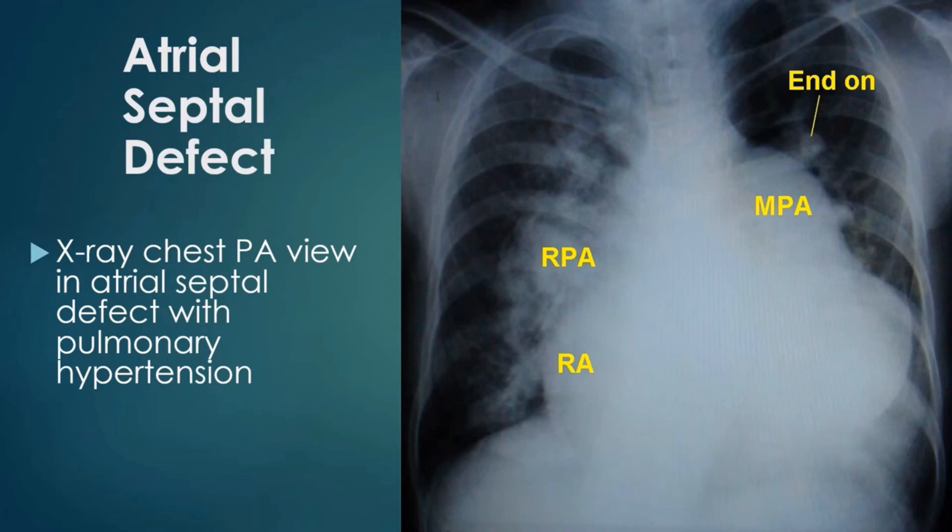Cardiomegaly on chest X-ray is suggestive of atrial septal defect in Eisenmenger syndrome, while it is unlikely in ventricular septal defect and patent ductus arteriosus. Cardiomegaly is mainly due to grossly dilated right atrium in atrial septal defect. The right atrium is not enlarged in the other two varieties of Eisenmenger syndrome.